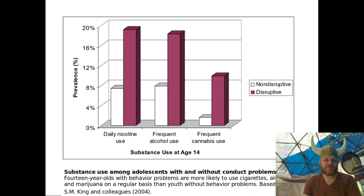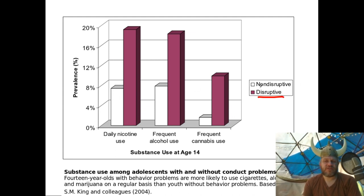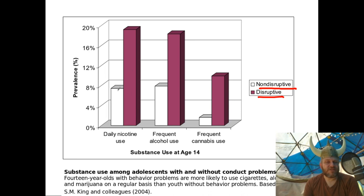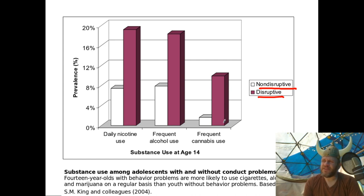This graph shows the percentage of kids in two groups — those who showed disruptive behaviors versus a control sample who did not — looking at substance use behaviors. The percentage of kids who use nicotine daily is at least twice as much in the disruptive behavior group. Very similar differences for alcohol use, and the differences are much bigger for cannabis use. This is one of the reasons we care about these kinds of problems so much.